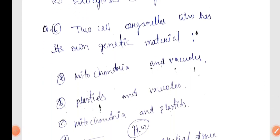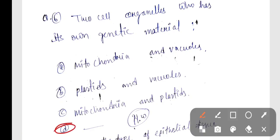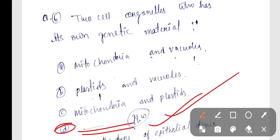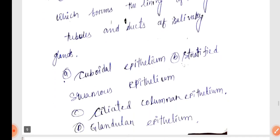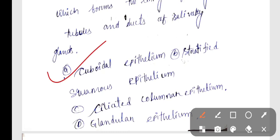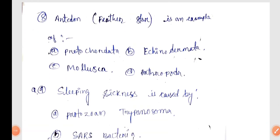Next question, Biology Q6: The cell organelles that have their own genetic material. The answer relates to cuboidal epithelium which lines kidney tubules and ducts of salivary glands. Next, Biology Q8: Starfish is an example of Asteroidea.